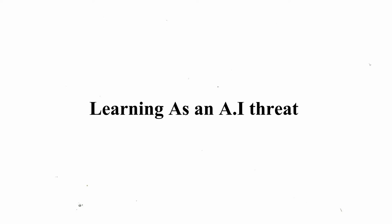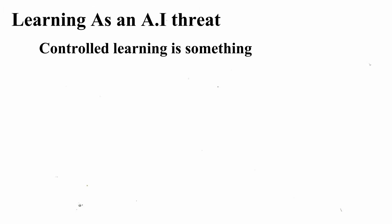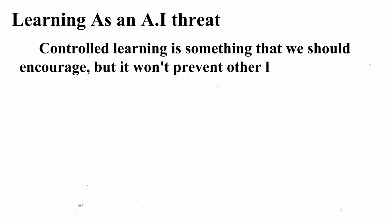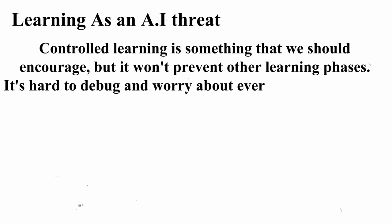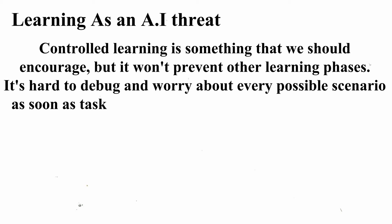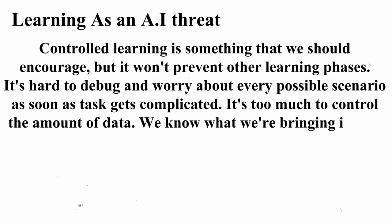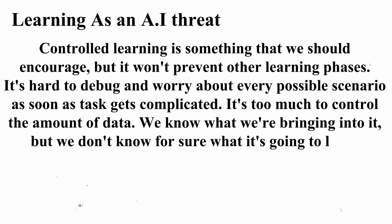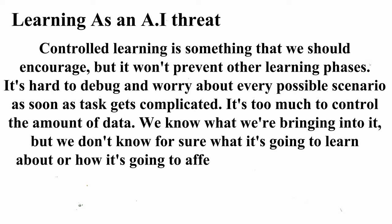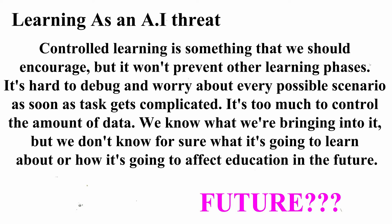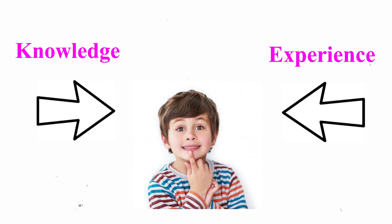Learning as an AI threat. This sounds contradictory, but it is not. Controlled learning is something that we should encourage, but it won't prevent other learning phases. It is hard to debug and worry about every possible scenario as soon as tasks get complicated — it is too much to control the amount of data. We know what we are bringing into it, but we don't know for sure what it is going to learn or how it is going to affect education in the future. Compare it to education: you try to teach your children the basic elements of life, but in the learning process, you can't control every single step along the way.